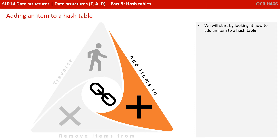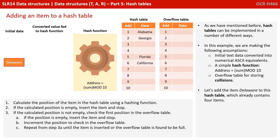So we'll start by looking at how to add an item to a hash table. Hash tables can be implemented in a number of different ways. In this example, we're going to make a few assumptions: the initial text data will be converted into numerical ASCII equivalents, a simple hash function — sum mod 10 — will be used, and an overflow table is going to be used for storing any collisions.